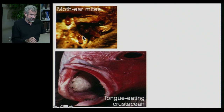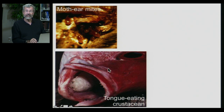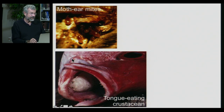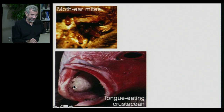Look at this — a fish that has had its tongue replaced by a crustacean. The larva of this crustacean swam into the fish's mouth, ate the fish's tongue, and planted itself on the floor of the mouth. So every time this fish eats, the parasite has first dibs at whatever comes inside.